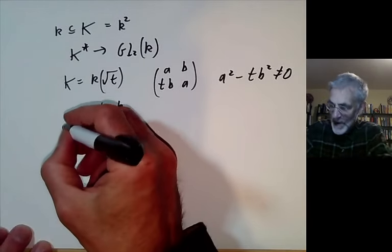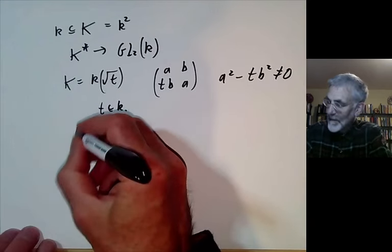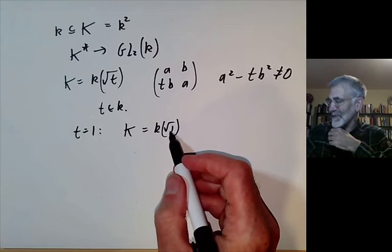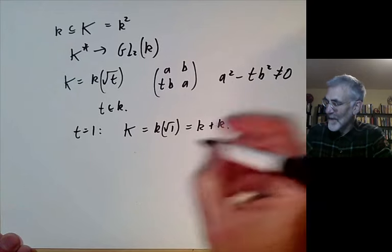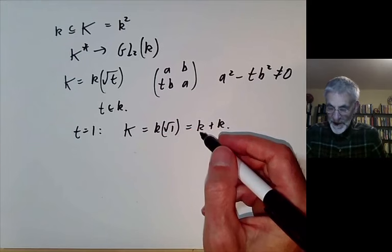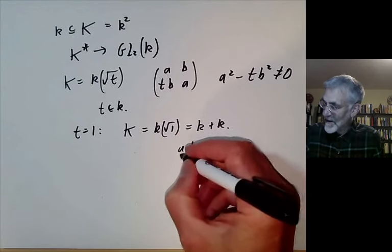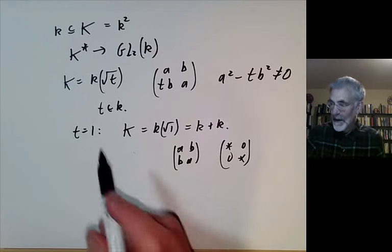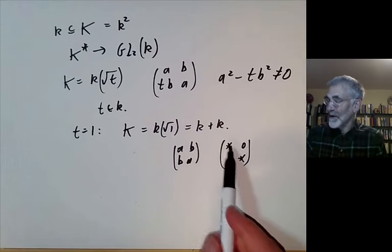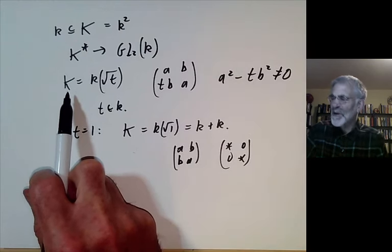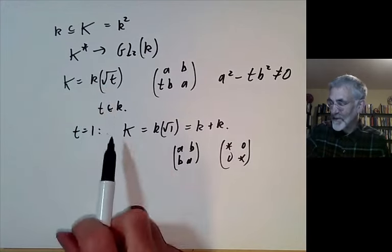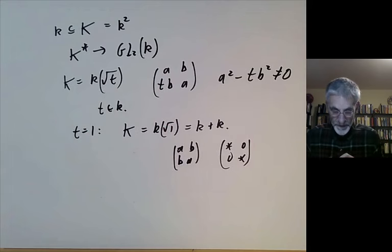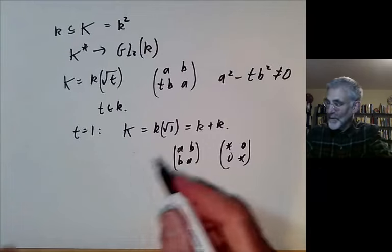In the special case where t equals one, K = k(√1) isn't really a field — it's a sum of two copies of k. This gives as our Cartan subgroup the matrices of the form [[a,b],[b,a]], which is actually conjugate to the set of diagonal matrices. So the obvious Cartan subgroup of diagonal matrices corresponds to a degenerate extension where the extension splits as a sum of two fields, while all others correspond to non-degenerate field extensions.